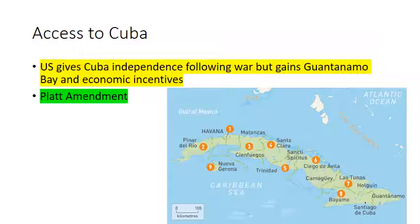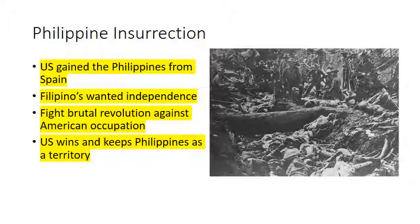After the war, the U.S. gave Cuba its independence but gained Guantanamo Bay and other economic incentives through the Platt Amendment. The U.S. also gained the Philippines. The Filipinos believed they would gain independence once the war ended since the Philippines had been a Spanish colony, but this did not happen. They fought a brutal revolution against the United States, and the U.S. won, keeping the Philippines as a territory. Non-interventionists pointed out the war crimes committed by American soldiers in the Philippines.